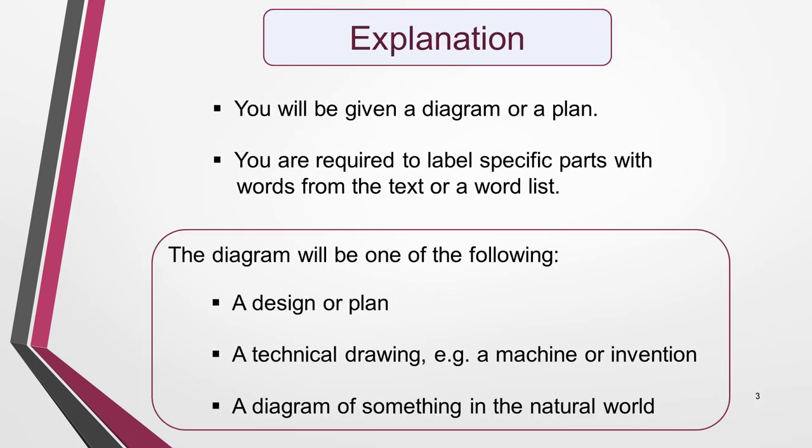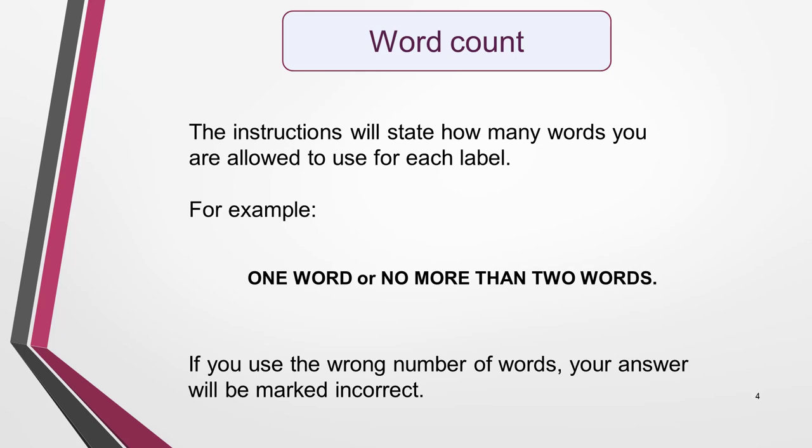First, let's look at what you have to do for this type of question. You will be given a diagram or a plan, and you are required to label specific parts with words from the text or from a word list. The diagram will be one of the following: a design or plan, a technical drawing — for example a machine or an invention — or a diagram of something in the natural world. If you are required to select words from the text, the instructions will state how many words you are allowed to use for each label, for example one word or no more than two words.